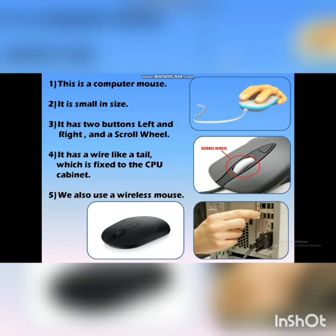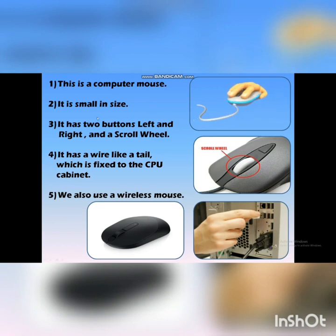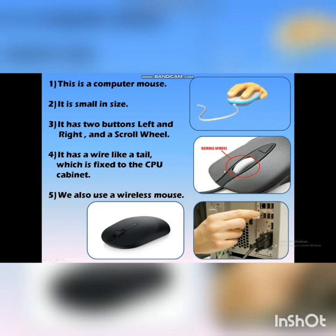Let's see the first picture. The first picture shows the example of a computer mouse. The size of the mouse is small. Now come to the second picture. It has two buttons — the left and the right button — and a scroll wheel. Children, can you see the second picture? It shows the two buttons, the left and the right, and a scroll wheel highlighted with a red circle.